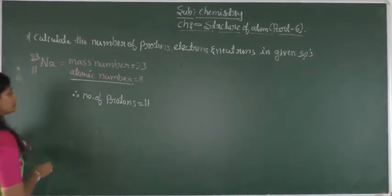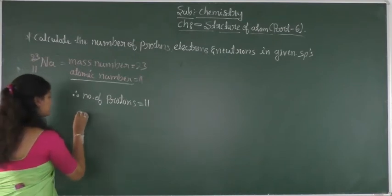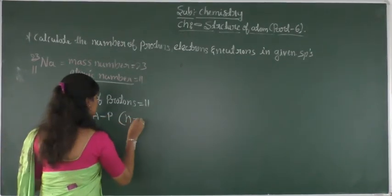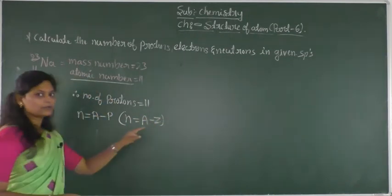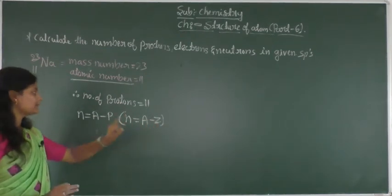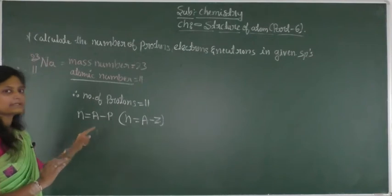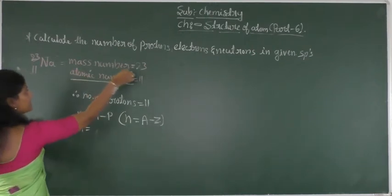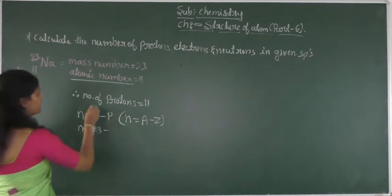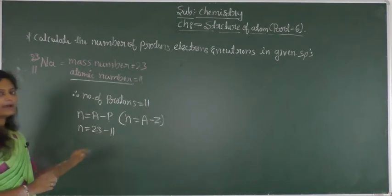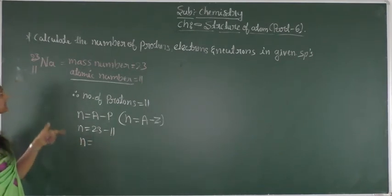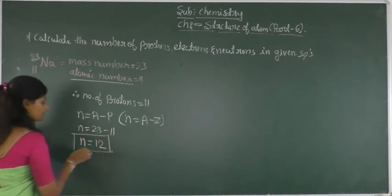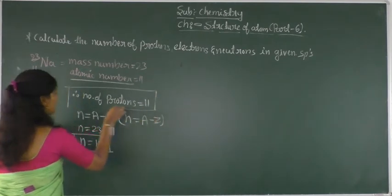Next, we find the number of neutrons. The formula is N equals A minus P, or equivalently N equals A minus Z, where Z is the atomic number — the total number of protons in the nucleus. So N equals 23 minus 11, giving 12 neutrons in the sodium atom.